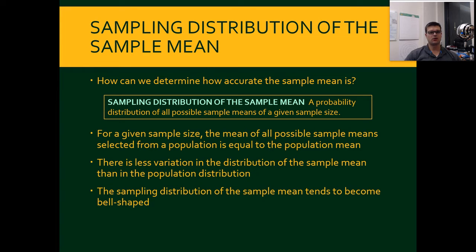So you have a population of, say, 30 people, and you want to take sample sizes of two. It would be every single possible outcome — taking two people at a time from that 30 — which we'll get into in just a minute.